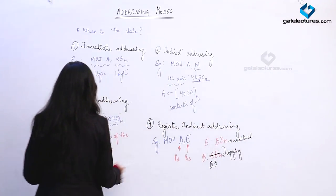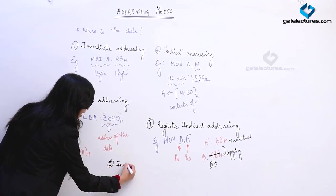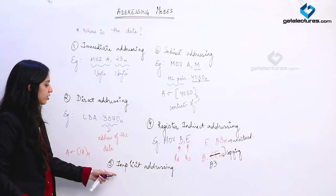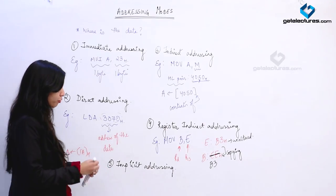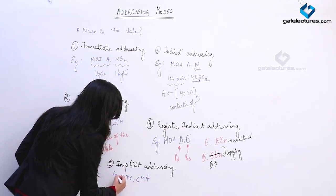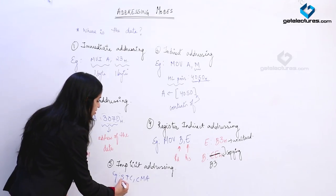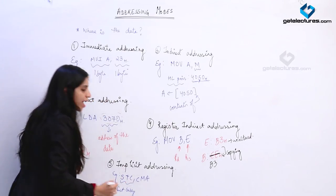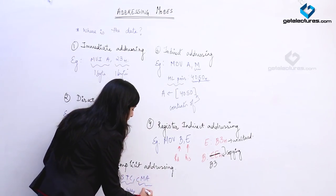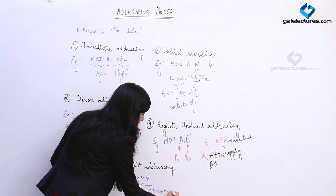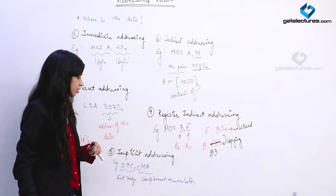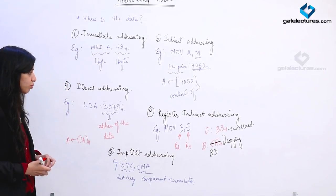There is one more addressing mode — implicit addressing. In this addressing mode, there is no specific register being referenced as an operand. It has instructions such as STC, CMA, and RRC. STC means set carry — we have a flag register with a carry flag, and after execution of this instruction the carry flag becomes 1. CMA means complement accumulator — all the contents of the accumulator are going to be complemented after execution. These are the 5 addressing modes that you need to know.